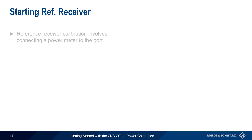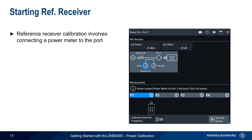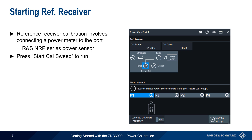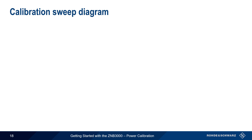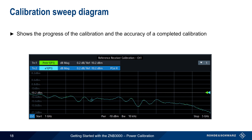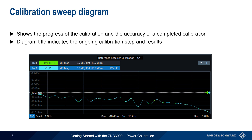Reference receiver calibration involves connecting a power meter to the port being calibrated — generally a Rohde & Schwarz NRP Series RF power sensor. Once the sensor is connected, press Start Cal Sweep to run the calibration, which only takes a few seconds. At the top of the power calibration window, a calibration sweep diagram shows the progress and accuracy of the completed calibration. These diagrams are available for other steps as well, with the title indicating the current calibration step and measured results.